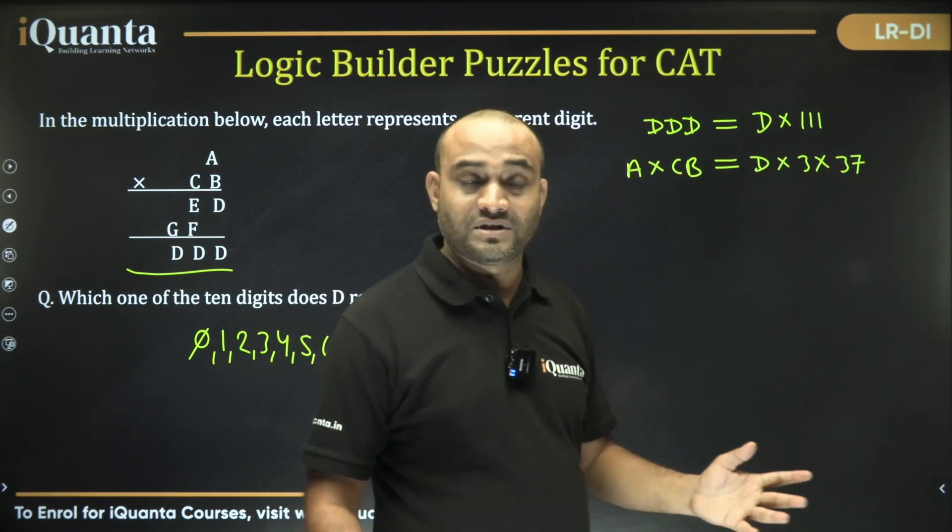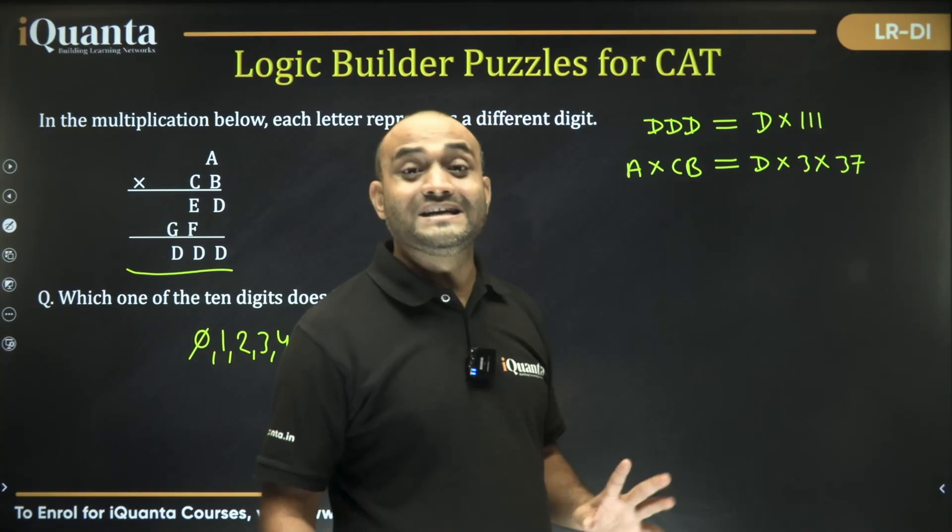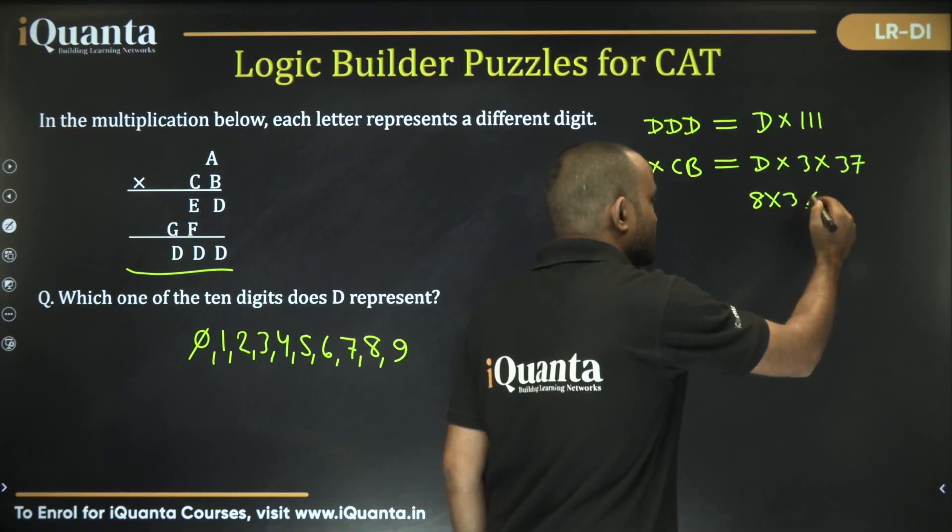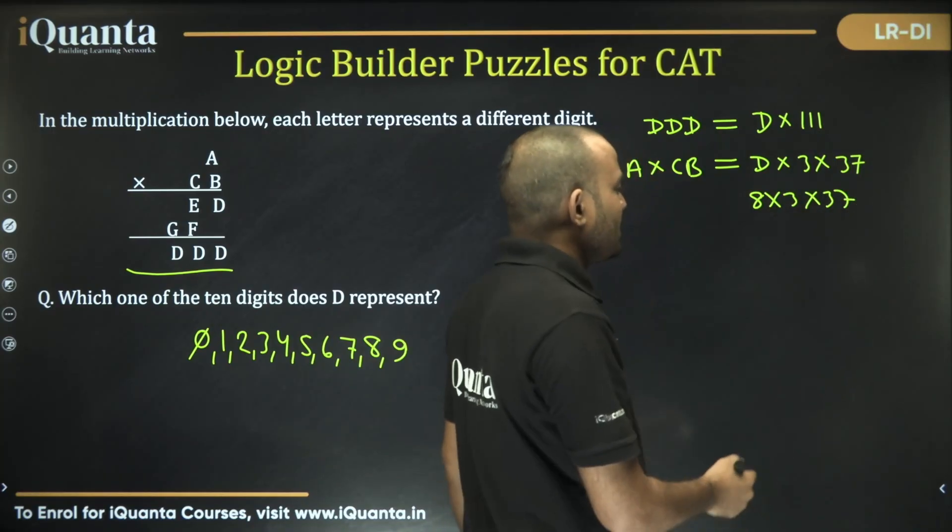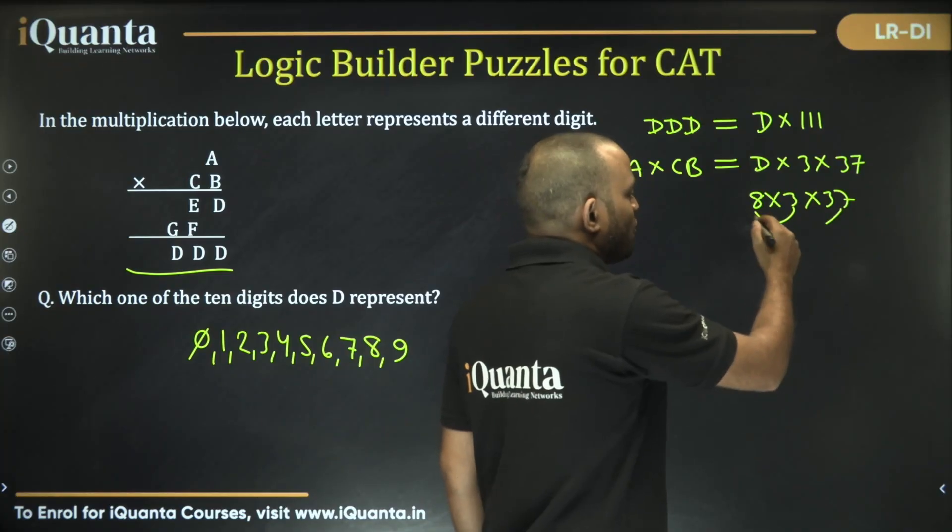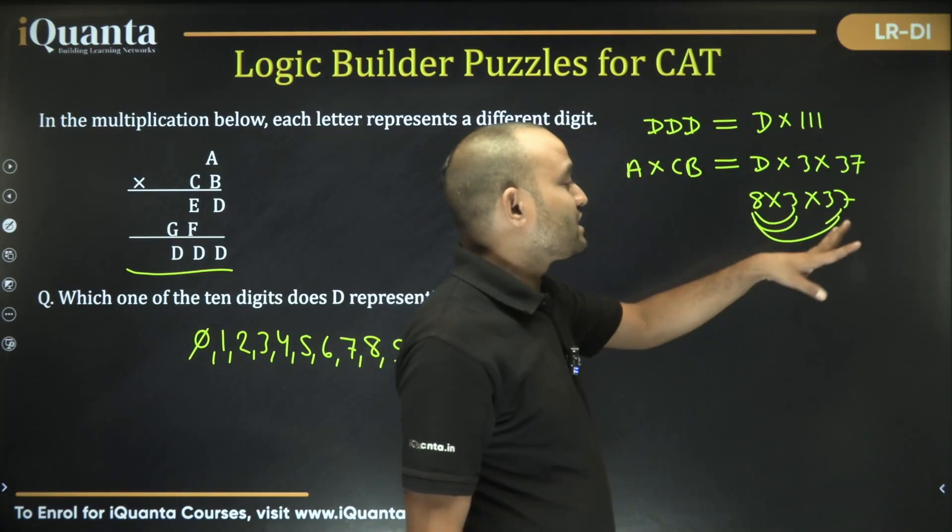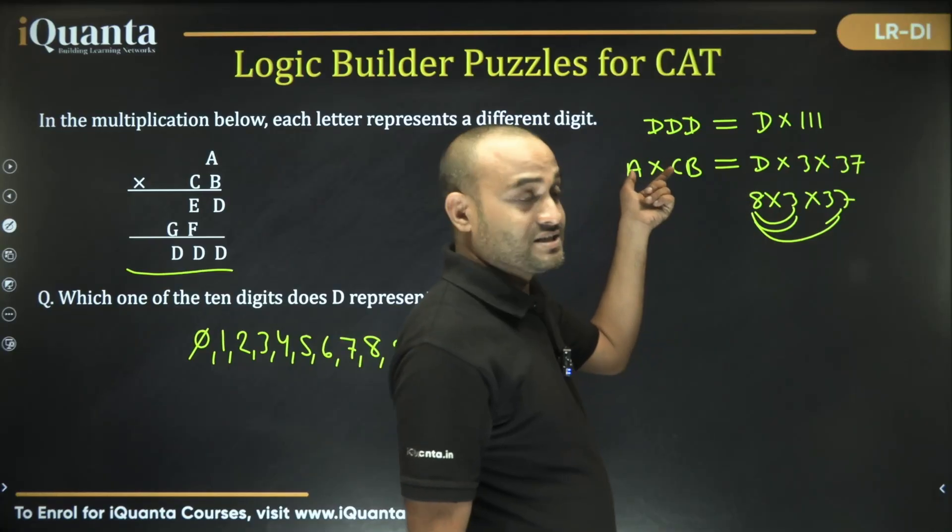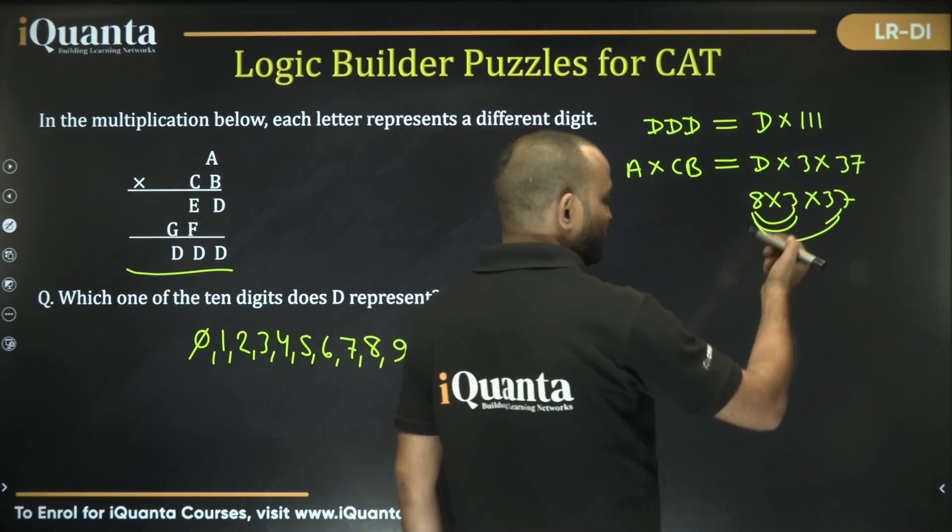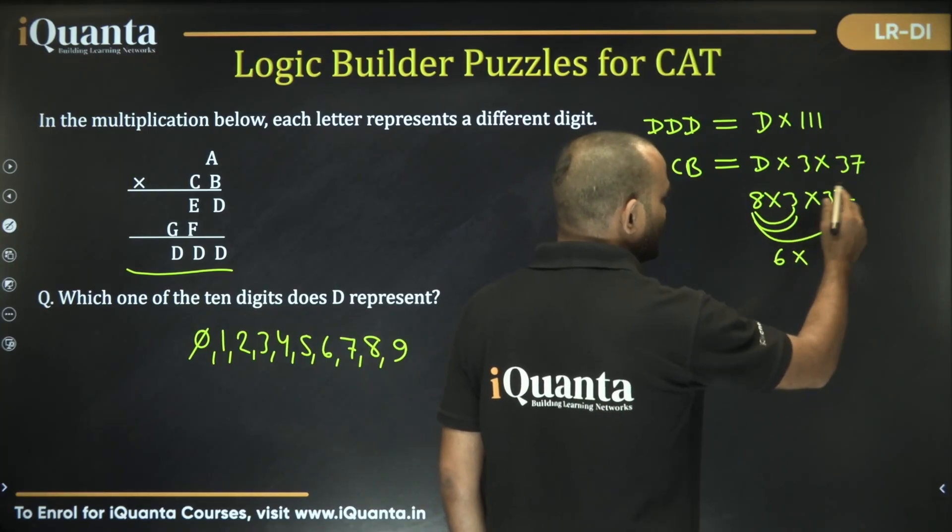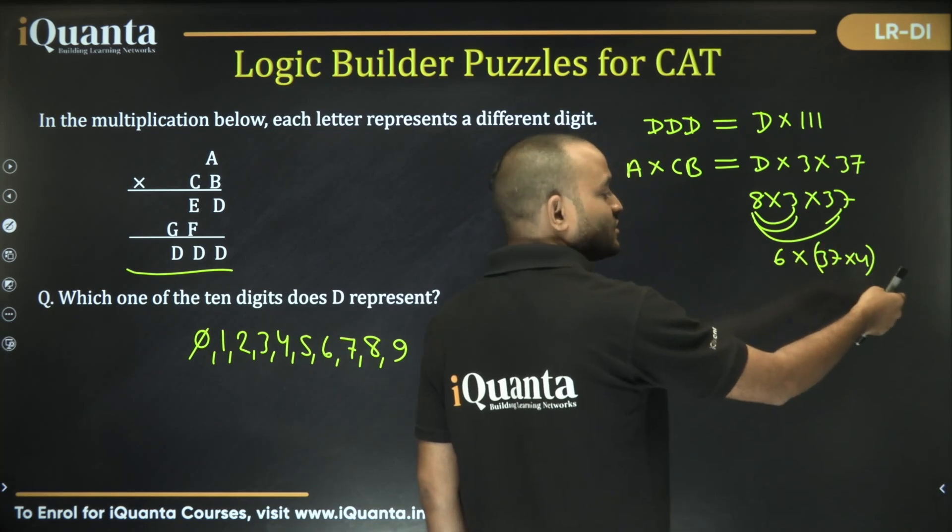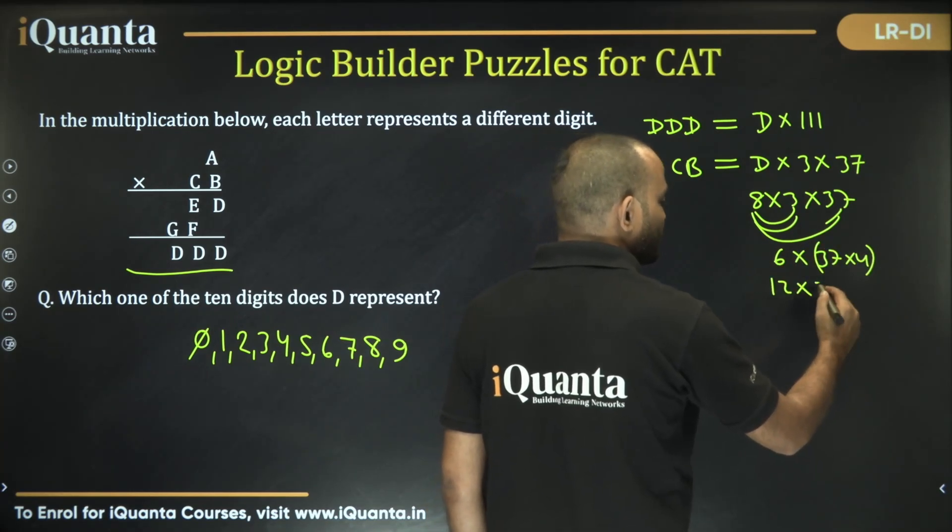If I am taking D is equal to 8, so how do you distribute that 8 into 3 into 37? You can put 4 here or 2 here. Still in both the cases we won't get this—that one number is two-digit and other is single-digit. For example, I can write it as 6 into 37 into 4, or 3 into 2 into 37 into 4, or I can write it as 12 into 74. So these are not valid.